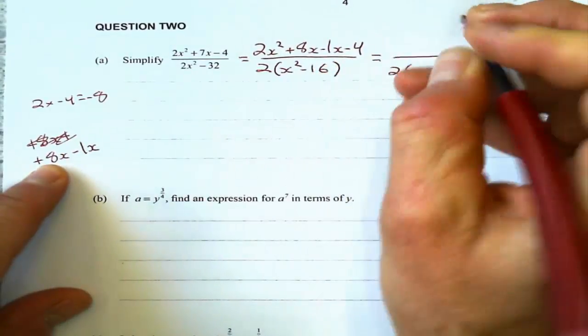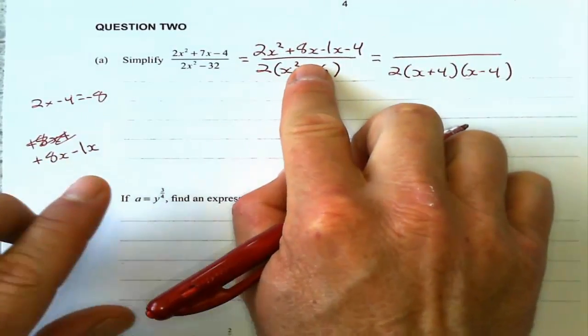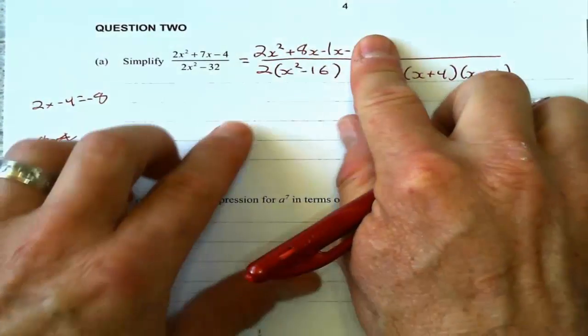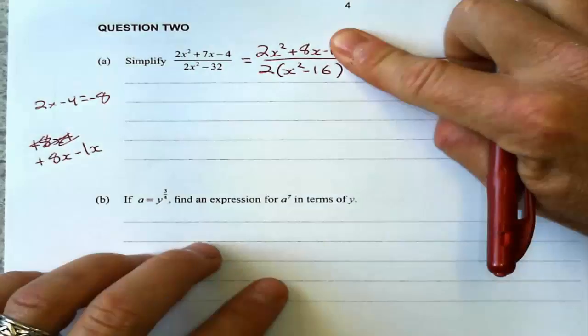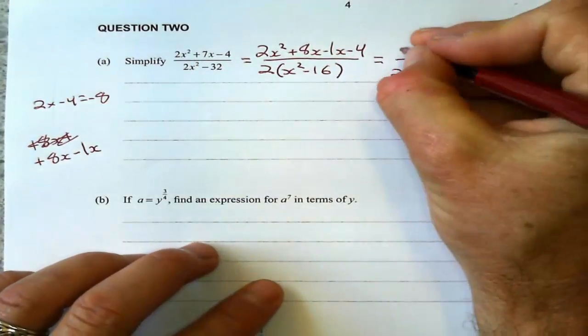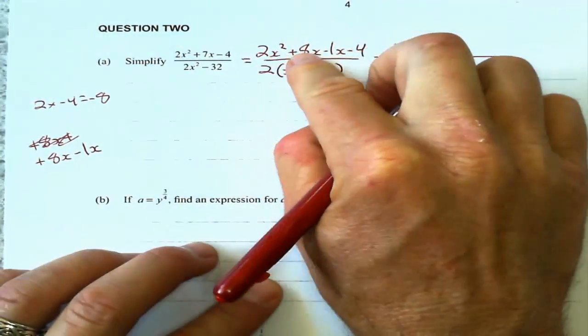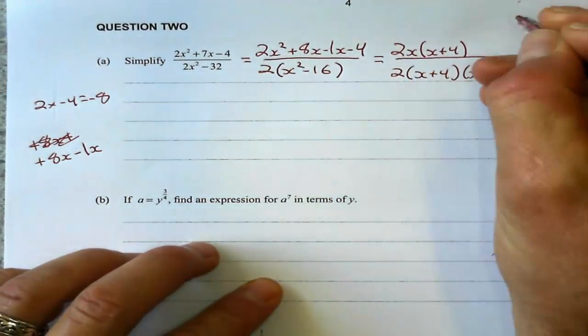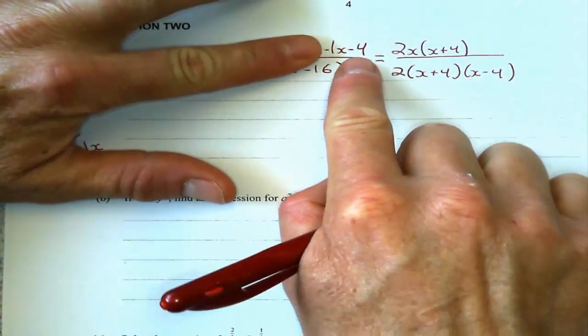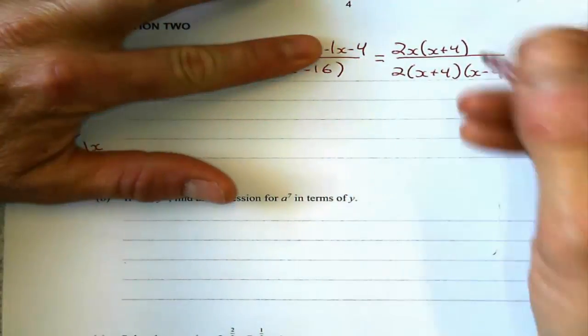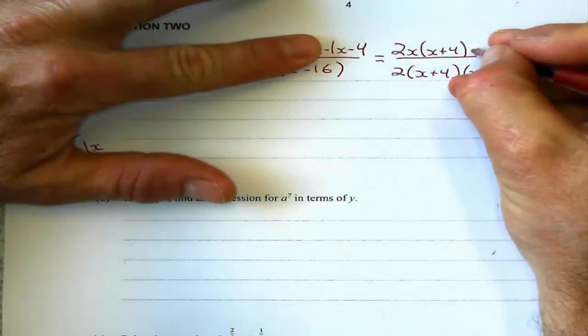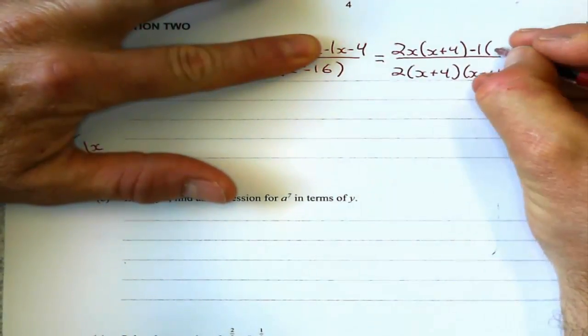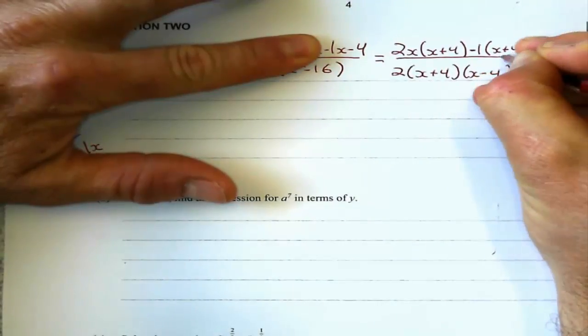I'm going to factorize by grouping here. Factorize by grouping means I'm going to look at these first two and factorize out a 2x. When I do that, I'm left with (x plus 4). For this second bit here, I'm just going to factorize out a minus 1. That's the only thing they have in common. When I factorize that out, I'm left with (x plus 4).